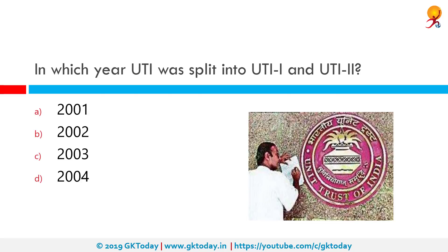In which year was UTI split into UTI 1 and UTI 2? The correct answer is 2003. UTI Mutual Fund was carved out of the erstwhile Unit Trust of India as a SEBI-registered mutual fund from February 2003. The Unit Trust of India Act 1963 was repealed, paving the way for the bifurcation of UTI into the Specified Undertaking of Unit Trust of India (SUUTI) and UTI Mutual Fund (UTI MF).